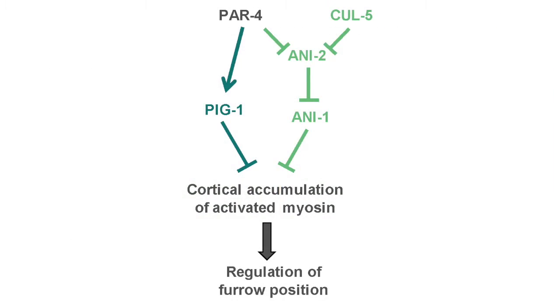So what I think we have shown is that two pathways, an anilin-dependent and anilin-independent pathway in which there is the kinase PIG1, prevent the accumulation of activated myosin at the anterior cortex during cytokinesis and this is really essential to prevent myosin from shifting the furrow towards the anterior of the embryo.